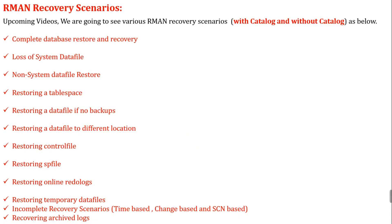In my upcoming videos we are going to see various RMAN recovery scenarios, both with catalog and without catalog. First, complete database restore and recovery — when the database gets crashed or corrupted, we have a valid backup and we can restore and recover using complete database restore and recovery. Next, loss of system datafile, and then non-system datafile restore.